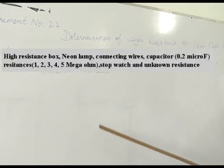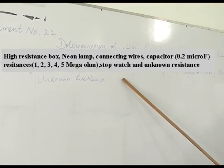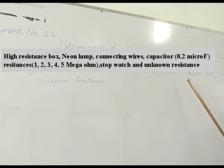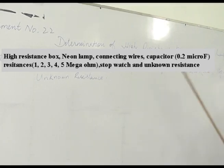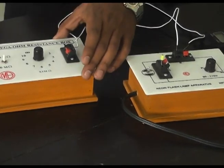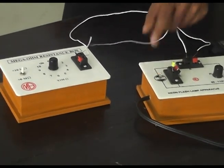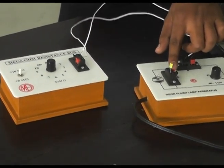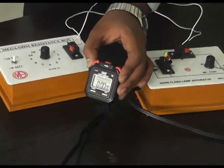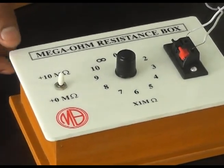In this experiment we are going to use the following apparatus: a high resistance box, Neon flash lamp, connecting wires, a capacitor of 0.2 microfarad capacitance, a stopwatch, and an unknown resistance.